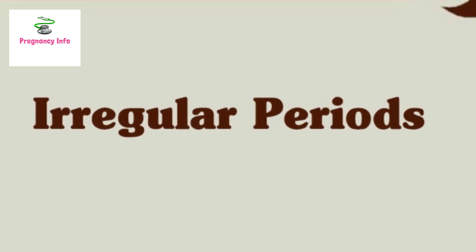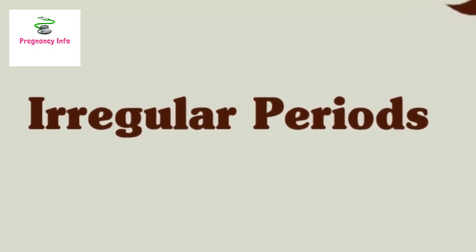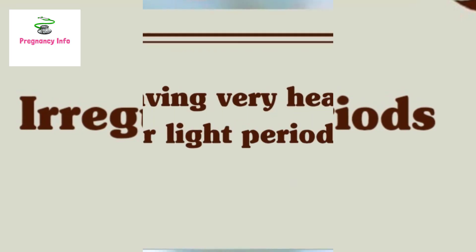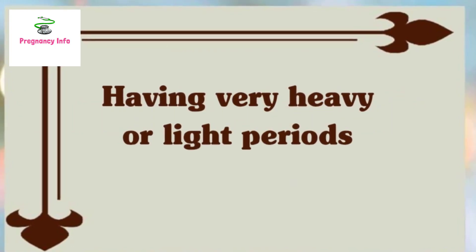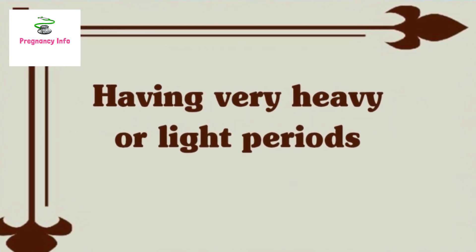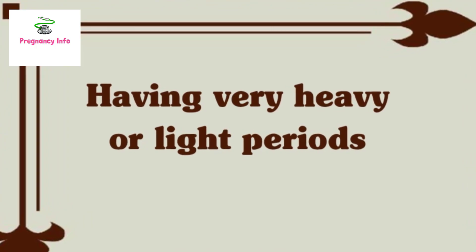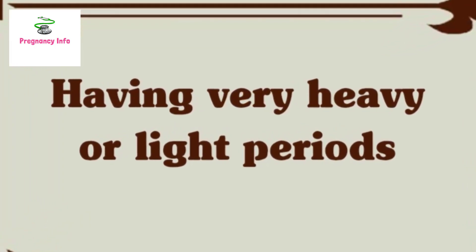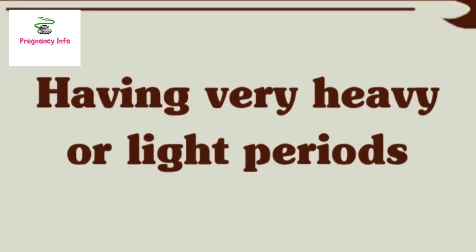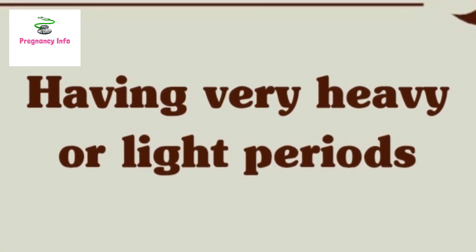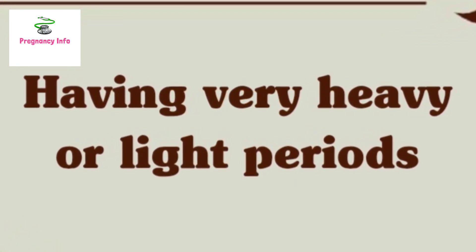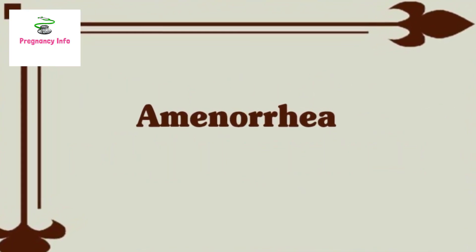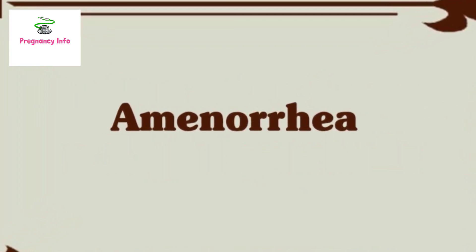The average menstrual cycle is 28 days, but it can be a couple of days shorter or longer. Having a very heavy or light period is also a sign. A heavy period is defined by losing over 16 teaspoons of blood within your period, or having a period that lasts longer than seven days. Blood loss of fewer than 4 teaspoons (20 ml) throughout your period is considered a light period.